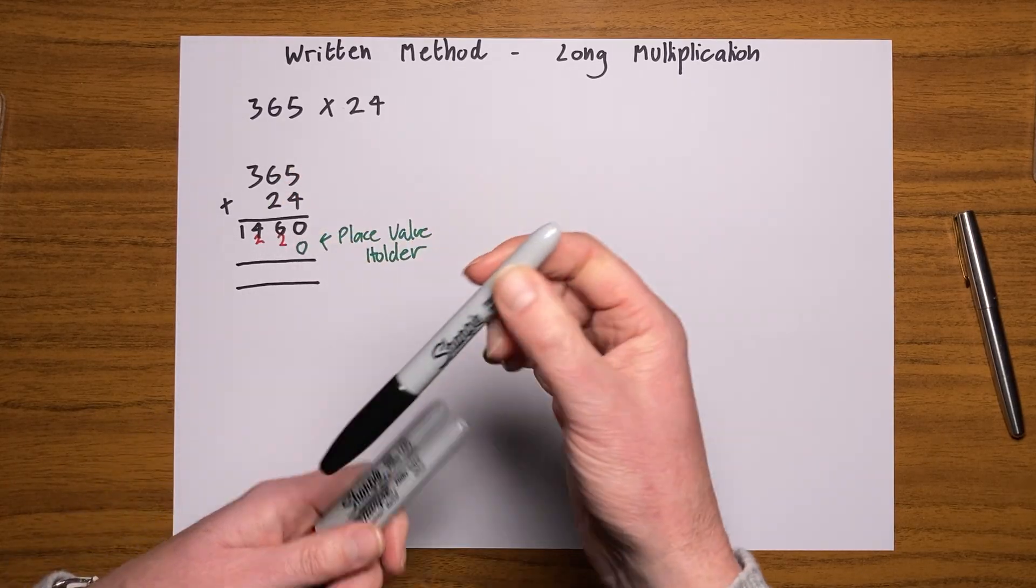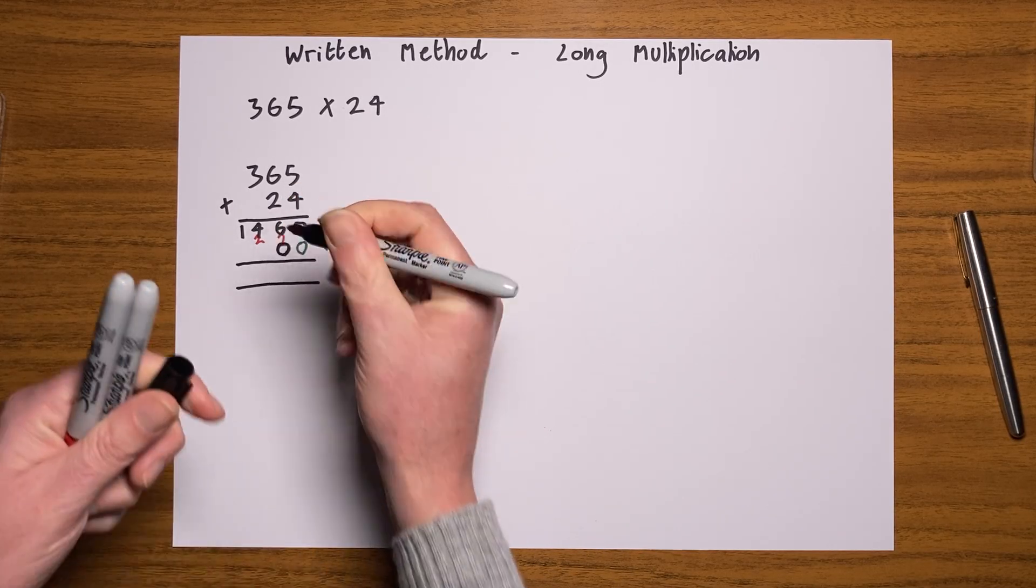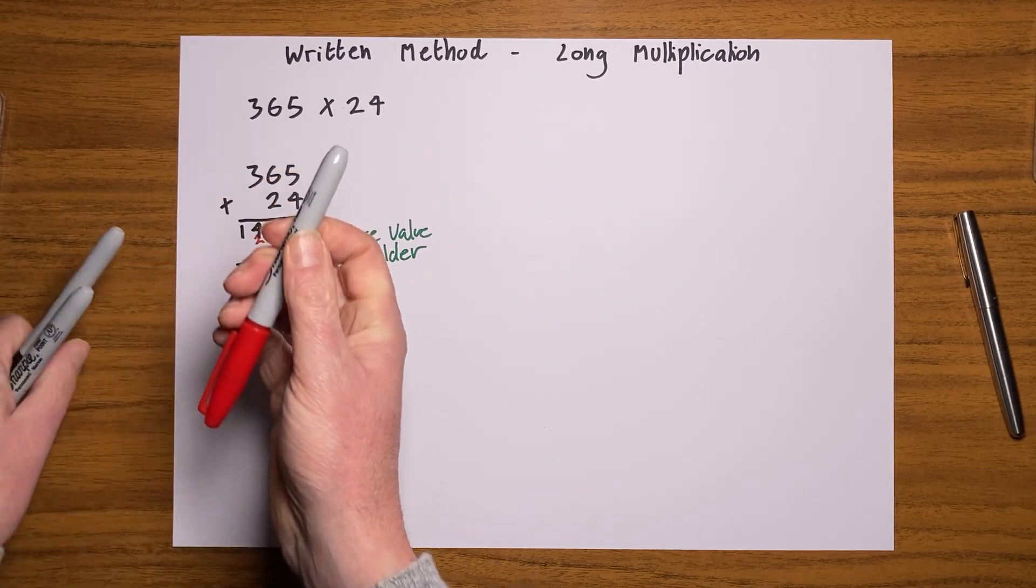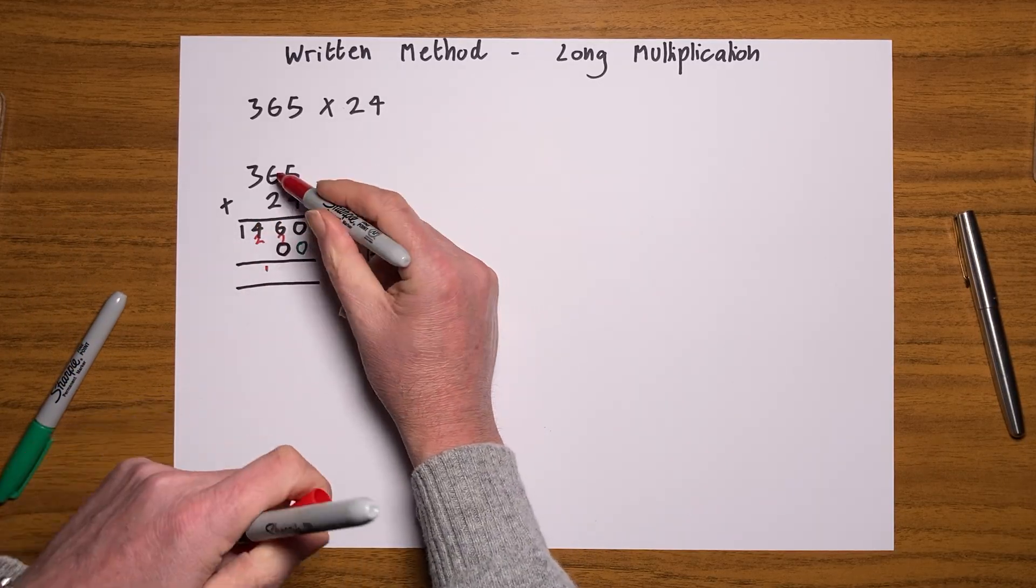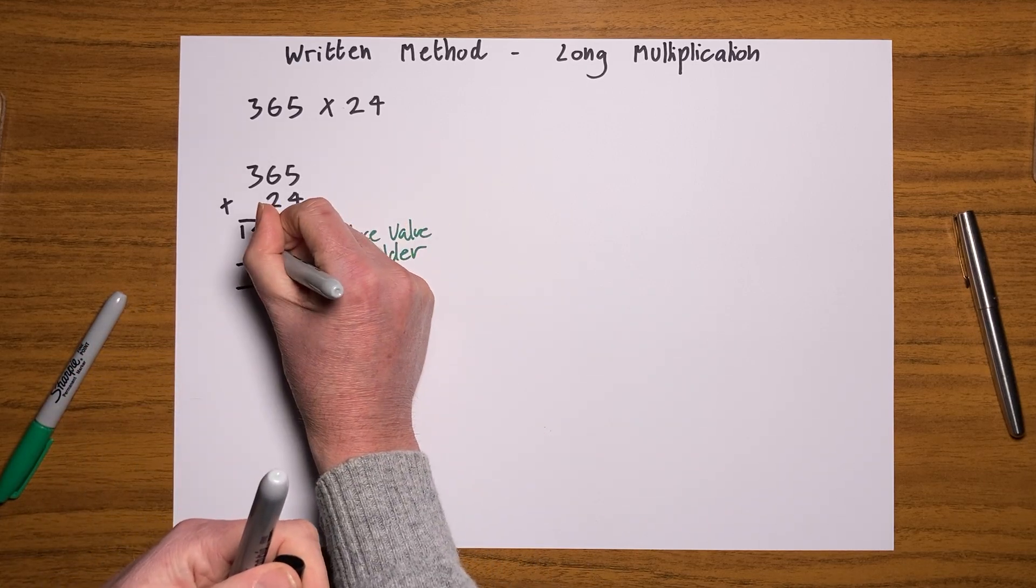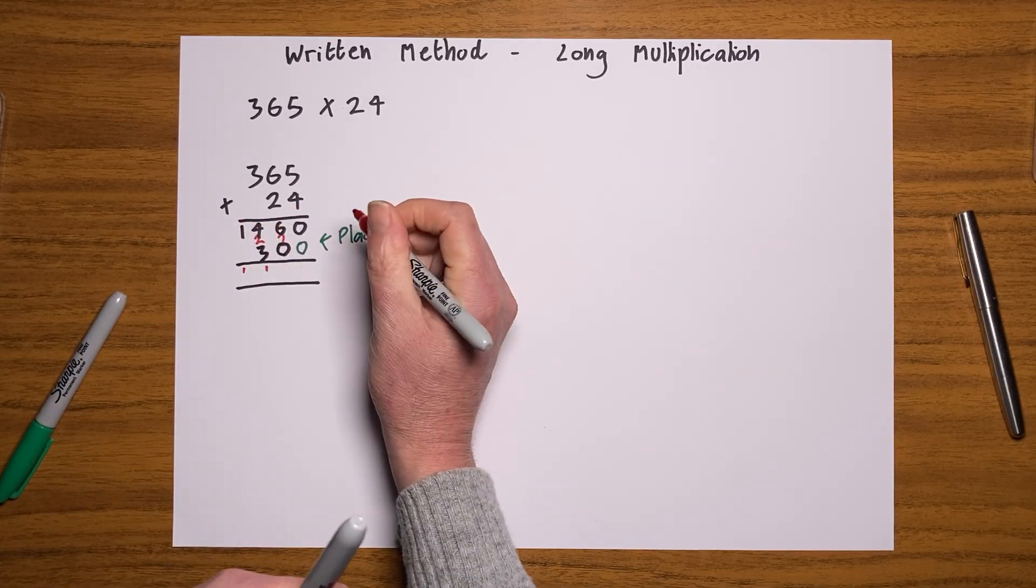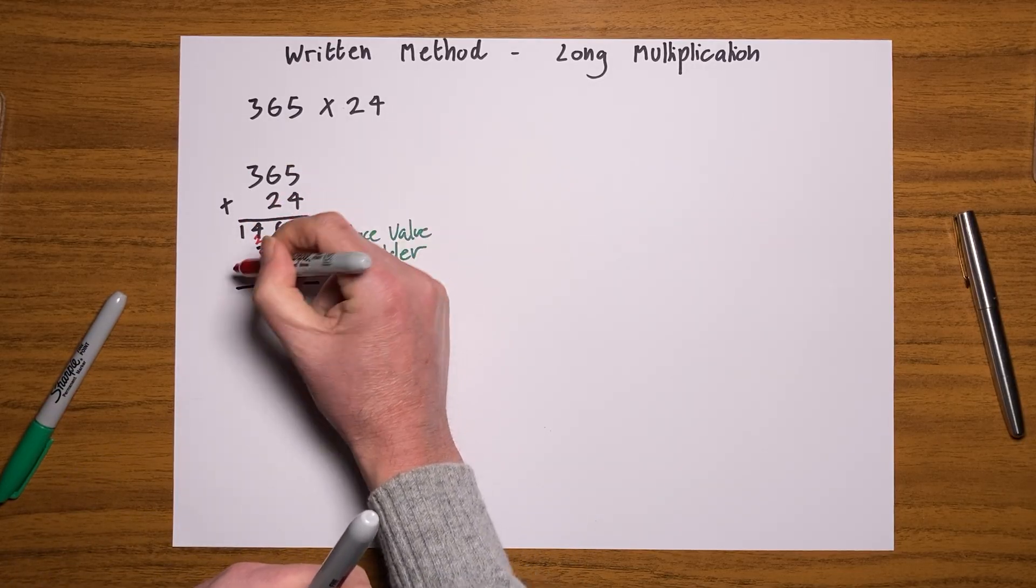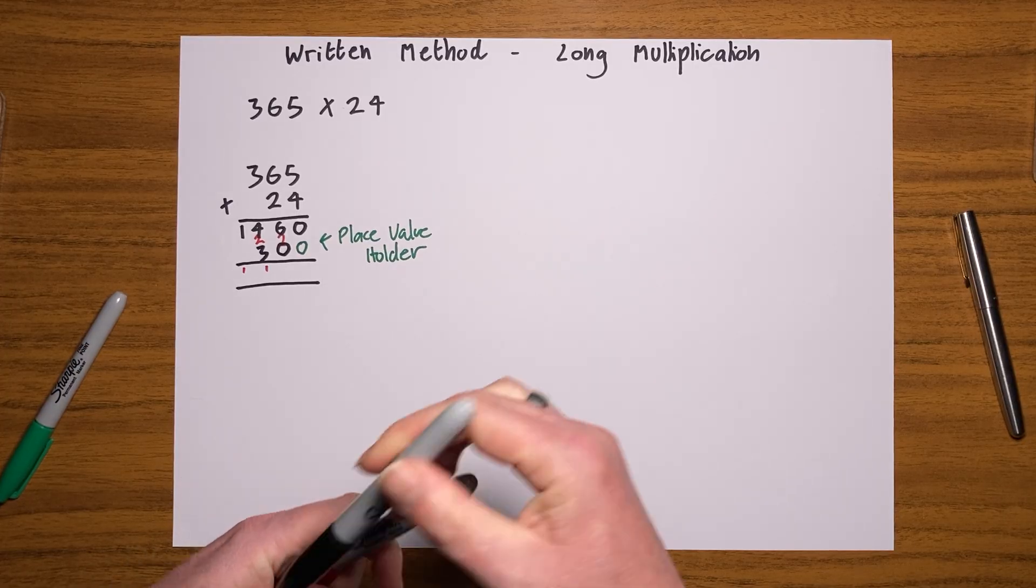You must put that zero in there each time you move on and start multiplying by the tens. So I'm now going to do five twos which are 10. Let's put my zero in here, carry my 10 over, put too many pens in my hand, and I'm then going to do six twos which is 12, add that one is 13.